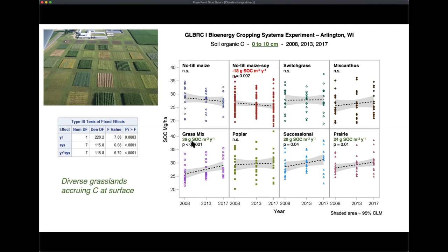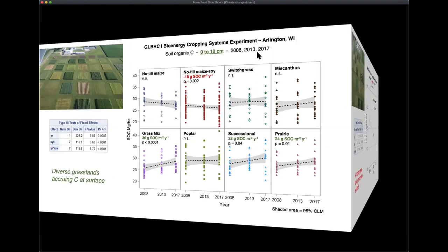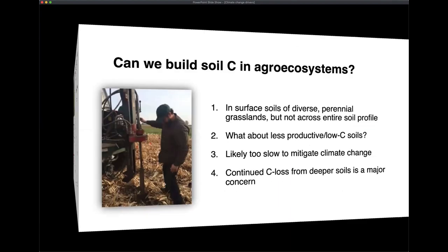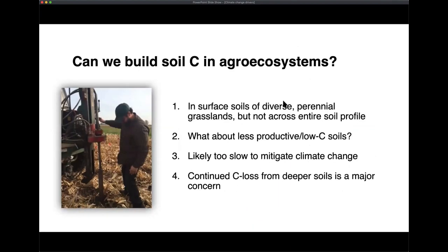Harking back to the estimate that we need 10 to 70 grams of carbon per meter squared per year to offset climate change, these grasslands look promising. But there's a rub: when we look across the entire 80 centimeters down to the glacial till, there are no differences among cropping systems. Lumping them all together, we see an overall trend from 2008 to 2017 of a loss of 77 grams of carbon per meter squared per year. So across the full soil profile, all cropping systems are losing a significant amount of carbon — pretty grim. Surface soils in diverse perennial grasslands are holding or gaining carbon, but that's not reflected across the entire soil profile.